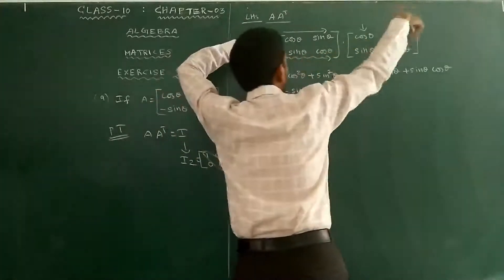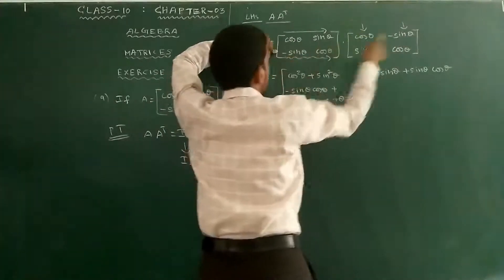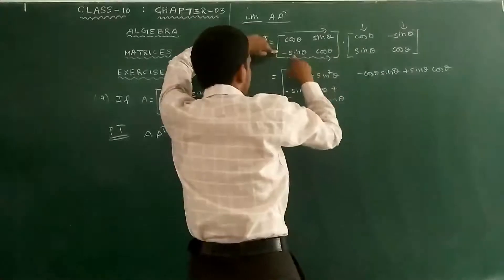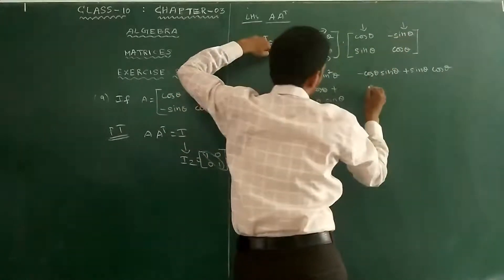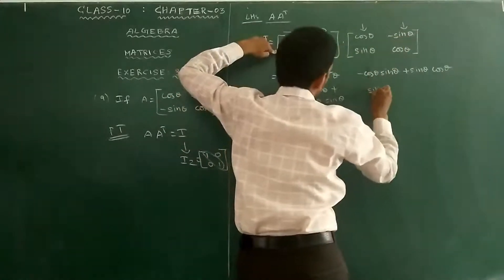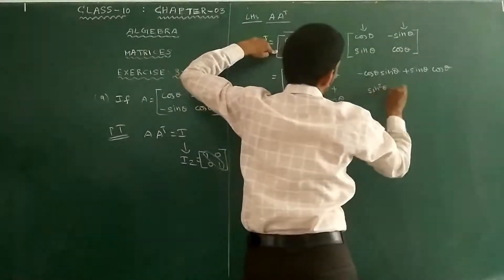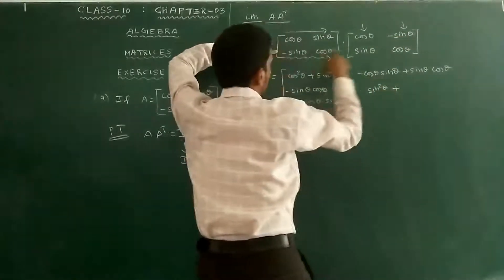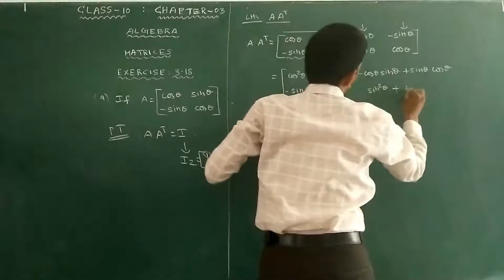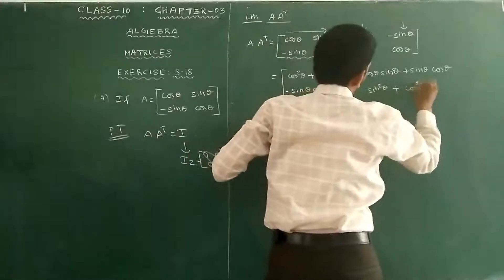For the second row, second column: −sin θ into (−sin θ) gives sin²θ, and cos θ into cos θ gives cos²θ. So the (2,2) element is sin²θ + cos²θ.